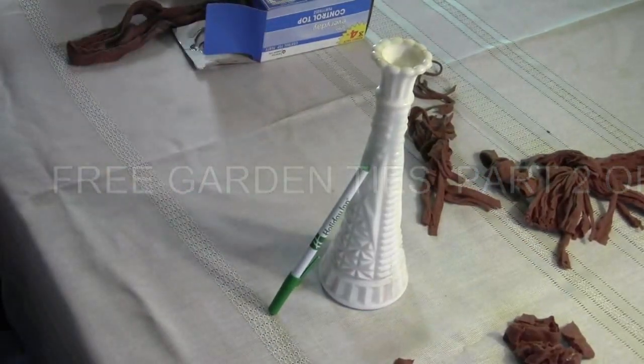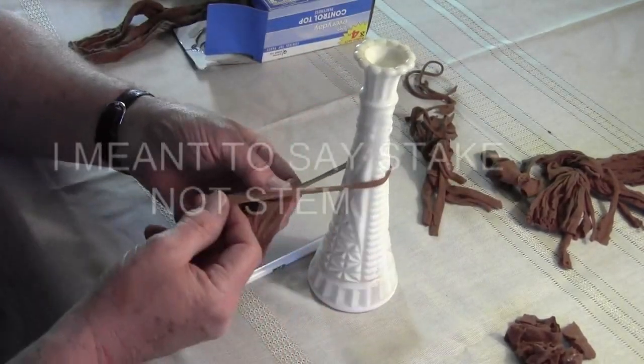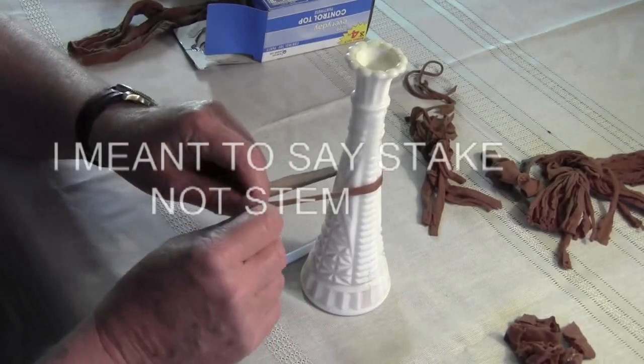There are a couple ways of using the ties. One, you can tie it around your stem on your tomato.